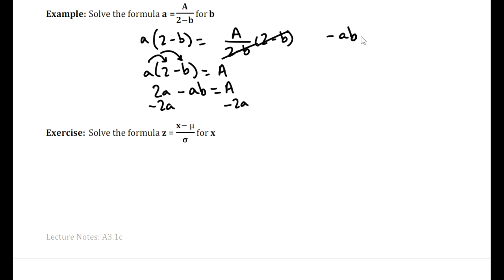So we have negative ab equals A minus 2a, and then we divide both sides by negative a. So b equals (A minus 2a) over negative a. Note that there are other ways of solving this equation for b. And if we multiply top and bottom by a negative and simply rearrange, we'll see that this is also a correct solution here for solving for b. So both of those answers are correct.